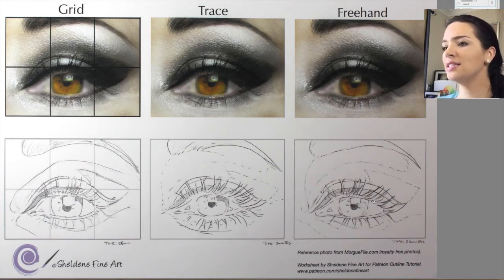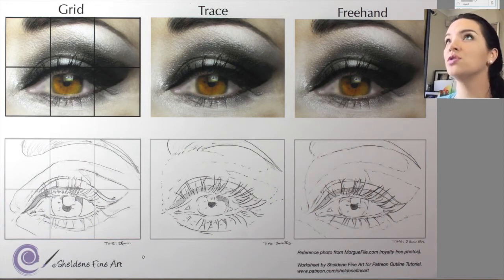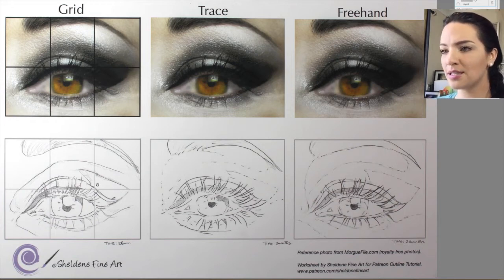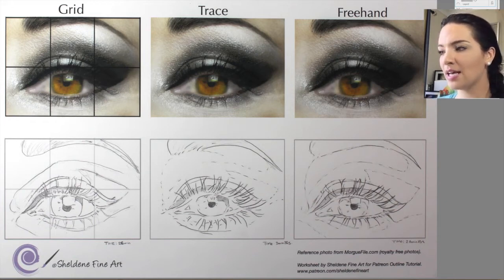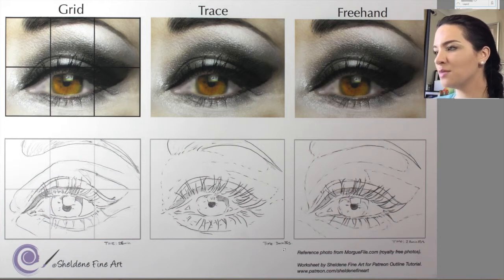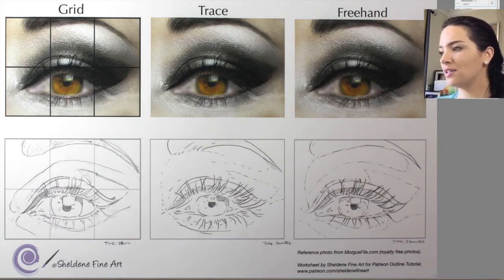After I did these outlines, I took note of the time each method took. The grid method took me 26 minutes to draw this outline. The tracing method only took three and a half minutes. And the freehand took the longest — that took me 28 minutes to just draw these outlines.